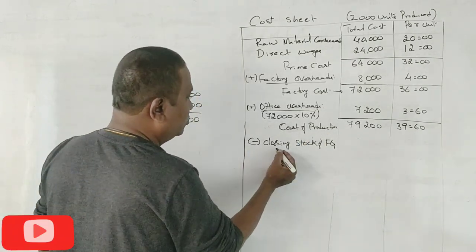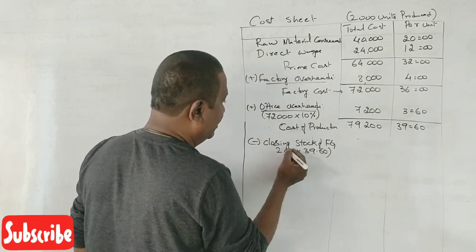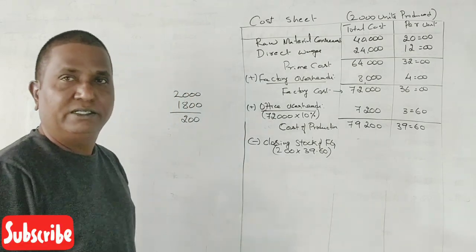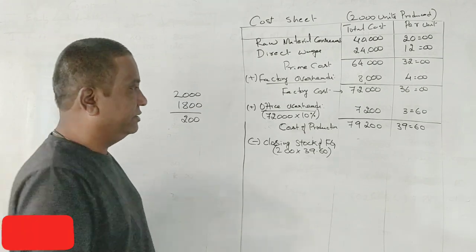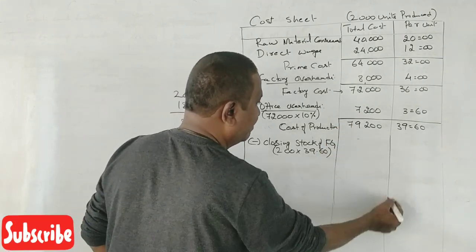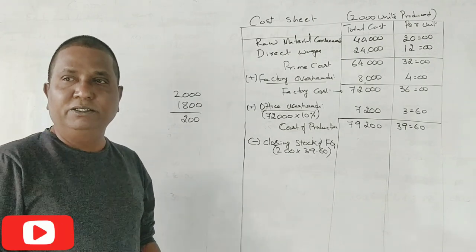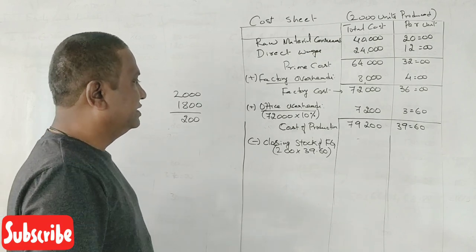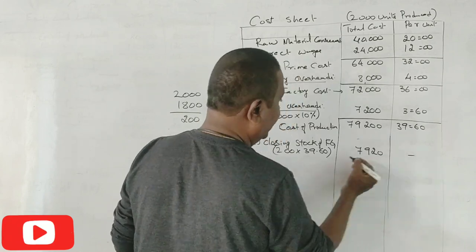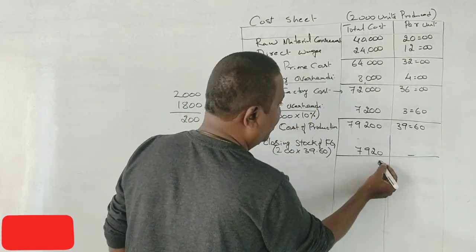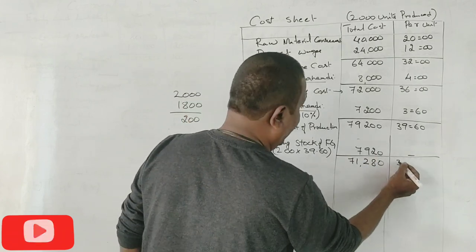Closing stock of finished goods - FG means finished goods. How do you calculate? 200 into what is per unit of cost of production? 39.60. 200 into 39.60 equals 7,920. Don't take the per unit. Now, if you deduct this, 71,280 and per unit you will get the same.